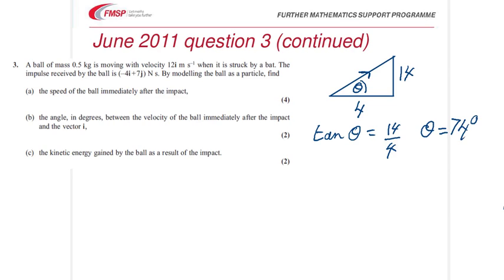And lastly, the kinetic energy gained. Well, we know that the magnitude of V, in fact the magnitude of V squared from 14 squared plus 4 squared, the magnitude of V squared was 212, so the KE after...